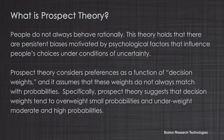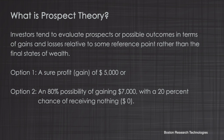Prospect theory considers preferences as a function of what I call decision weights, and assumes that these weights do not always match with probabilities. That is, investors tend to overweight small probabilities and underweight large probabilities. Investors also tend to evaluate prospects or possible outcomes in terms of gains and losses relative to some reference point, rather than the final states of wealth.